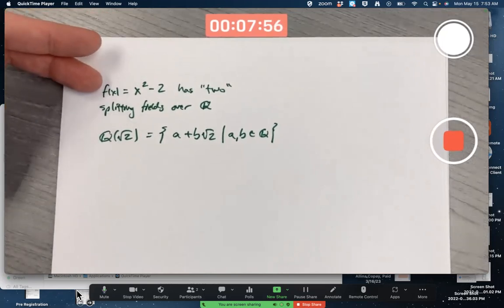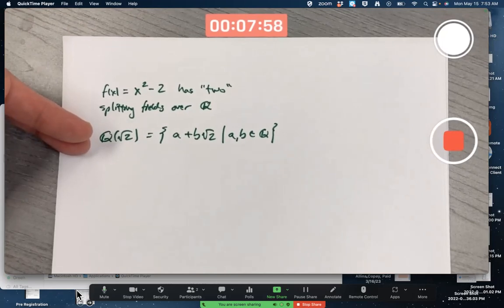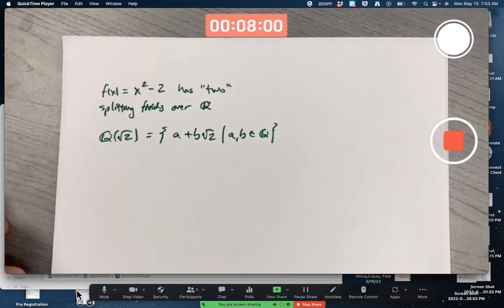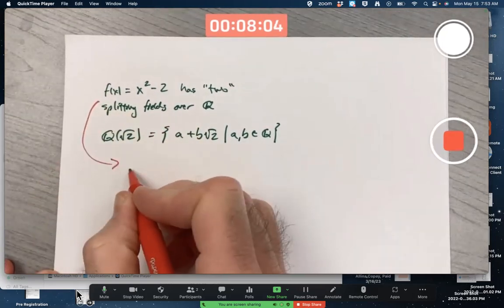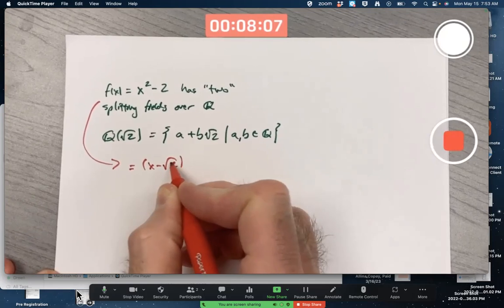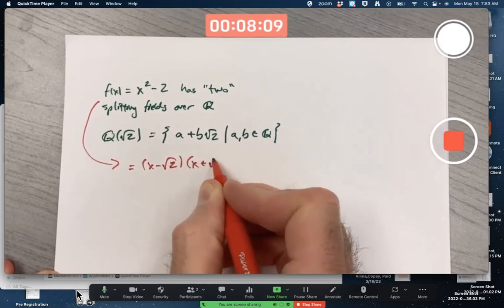This polynomial does split in this field extension of the rationals, it completely factors, x - √2 and x + √2.